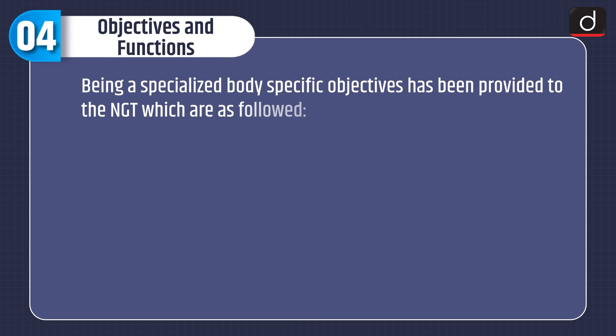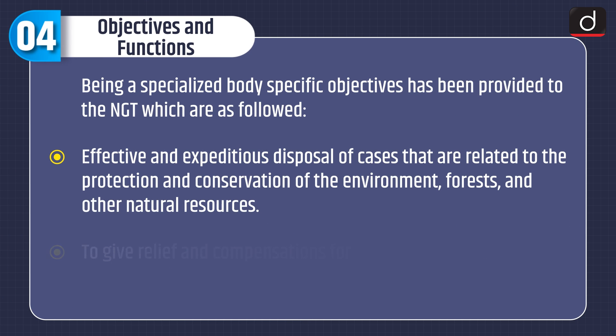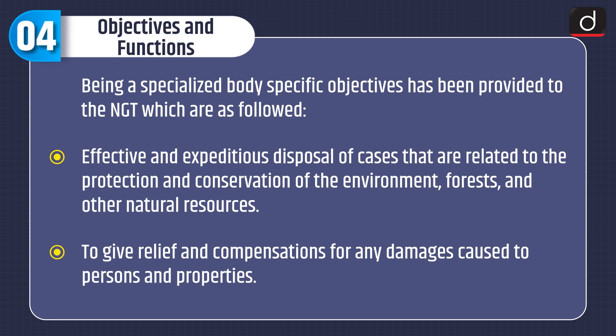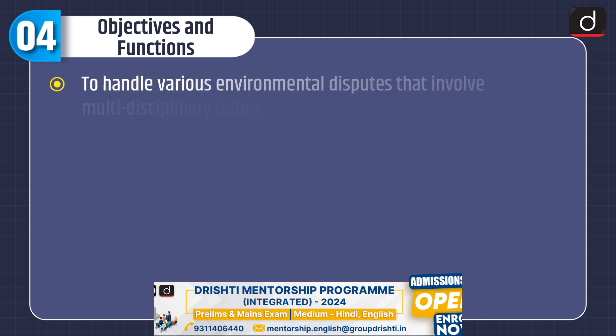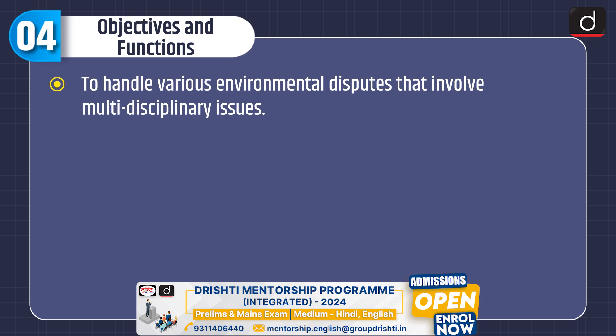Now let's discuss about the objectives and functions of the National Green Tribunal. Being a specialized body, specific objectives have been provided to the NGT, which are as follows: effective and expeditious disposal of cases related to protection and conservation of the environment, forest and other natural resources; to give relief and compensation for any damages caused to persons and properties; and to handle various environmental disputes that involve multidisciplinary issues.